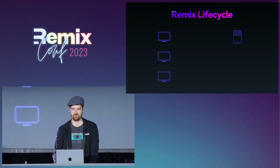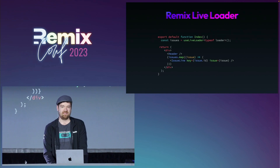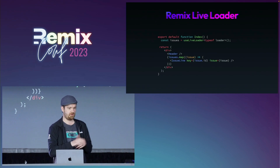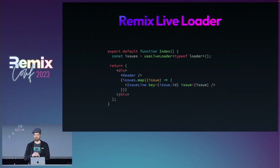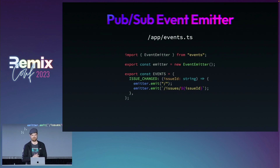And that's what we're going to do with this hook. I call it Remix Live Loader. It replaces useLoaderData, but it makes sure that whatever route you're on is going to always have the most up-to-date data possible. You need three things for any kind of real-time. The first is some kind of pub-sub system — some way for the server to know to send messages to the client.